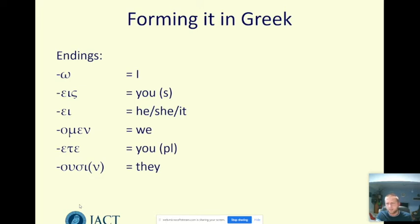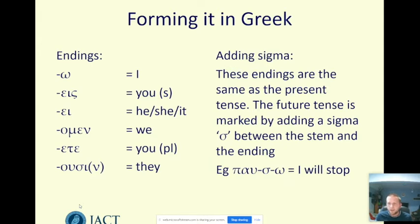You might have spotted that those endings are the same as the present tense. That's good news because you don't need to learn any new endings for this tense, but then how do you spot something in the future tense? Well, there's a letter that is a big flashing marker — here comes the future tense — and that is a sigma. So between the stem of a verb and the ending that comes afterwards, the letter sigma is inserted. The verb pauo means 'I stop,' so pau, then a sigma, then an omega — 'I will stop.' Put a sigma between the stem and the present tense ending, and it makes a verb future tense.